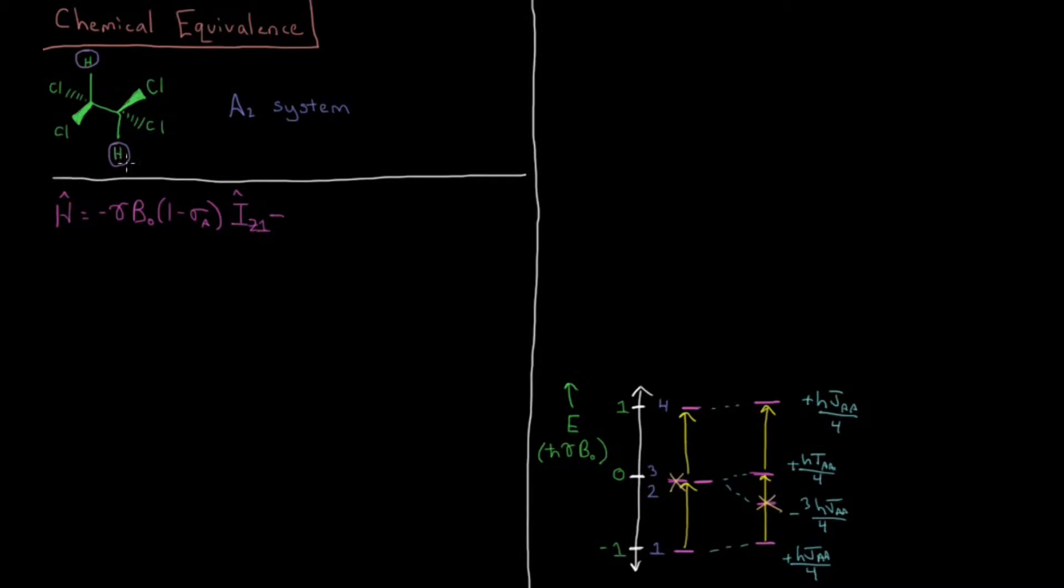Minus, and we have the same thing for the interaction of the magnetic moment of proton 2 with the external magnetic field. It has the same magnetogyric ratio gamma, same external magnetic field. It's chemically equivalent, so it has the same chemical environment, so it has the same shielding constant, and then times the operator for its Z component of its nuclear spin angular momentum.